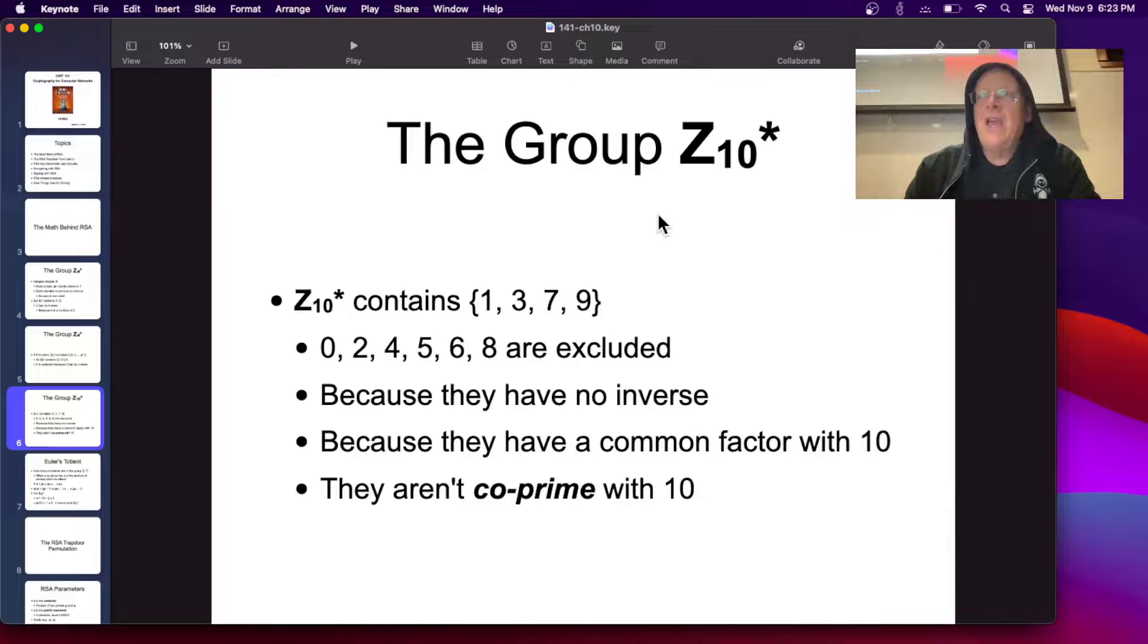The ones we're going to use in RSA are like this, the product of 2 primes. 10 is 2 times 5. So the group, Z star 10, would contain the numbers from 1 to 9, but it's only going to include the ones that have an inverse. And you can see 2, 4, 5, 6, and 8 are excluded because they're not relatively prime with 10. That's how you check them. If this can be divided into that evenly, then you cannot use it because then it will not hit all the numbers as you multiply it by powers.